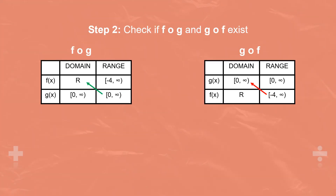Step 2 is to check if FOG and GOF actually exist. Notice in the table for g of f of x I've swapped around f of x and g of x, because this time we have g of f of x, so f of x is contained in g of x — the range of f of x should be contained in the domain of g of x. For FOG, 0 to infinity does fit within all real numbers, so FOG does exist. Unfortunately for GOF, it does not exist because negative 4 to infinity is not contained within 0 to infinity.